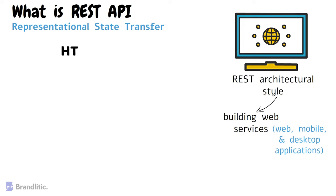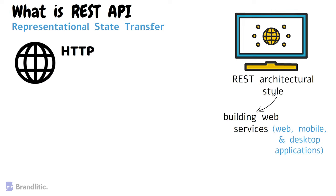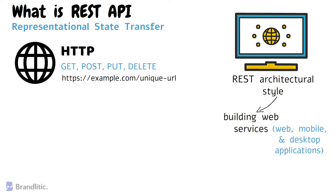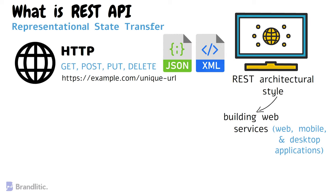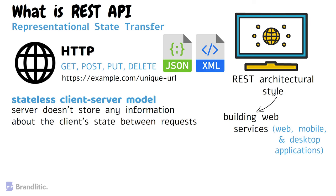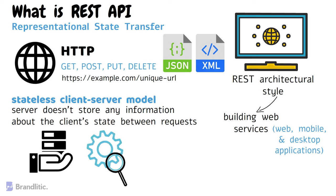REST is based on HTTP, which is the standard protocol used for communication on the internet. It uses HTTP methods including GET, POST, PUT, and DELETE to perform various operations on resources. Each resource in REST is identified by a unique URL, and the response is returned in JSON or XML format. One essential feature of REST API is that it follows the stateless client-server model, meaning the server doesn't store any information about the client's state between requests. Instead, each request contains all necessary information required by the server to process it, making REST API scalable and easy to maintain.